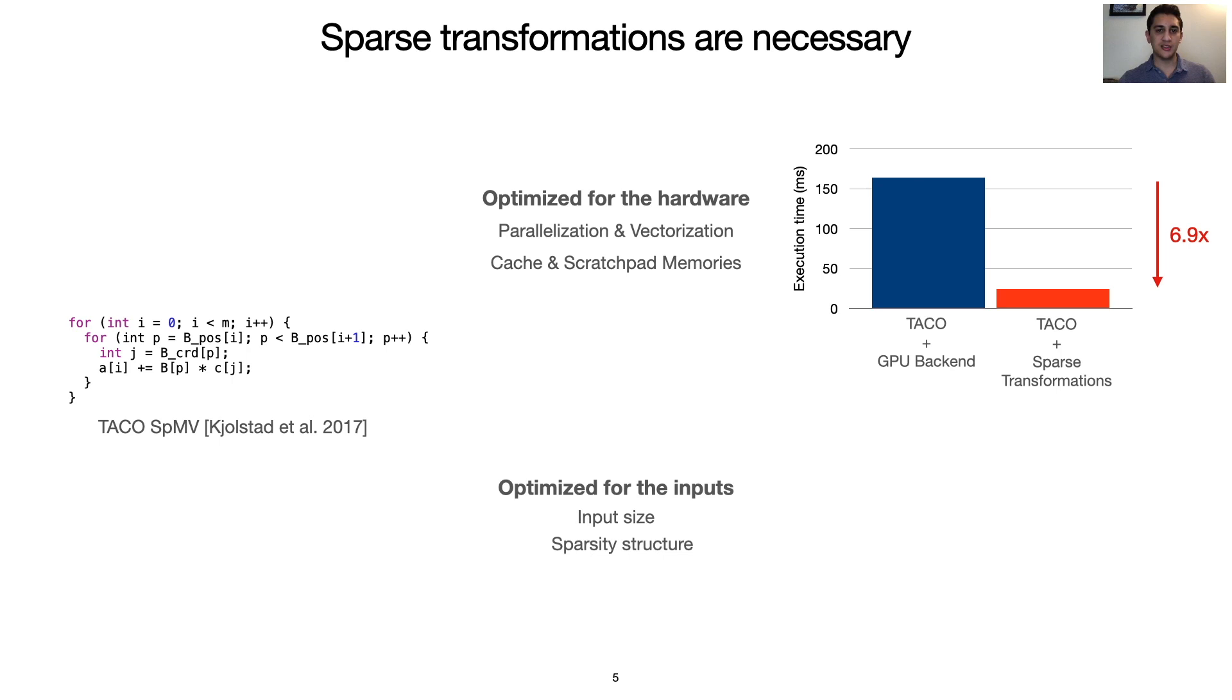In addition, these transformations allow for exploring an optimization space, depending on characteristics of the inputs. The input size and the sparsity structure can greatly impact the profitability of different optimizations in difficult-to-predict ways.